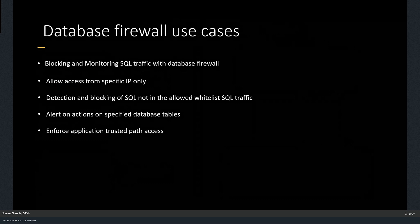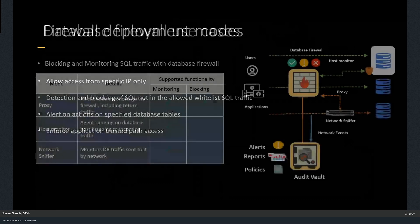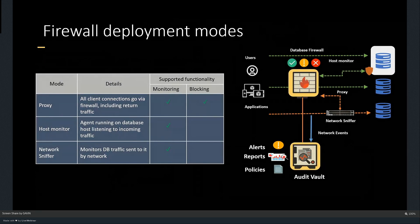There are three modes in which you can run the firewall. Host monitor just monitors the traffic coming on a particular network interface and sends that information to the audit vault server — the repository gets populated with IP addresses, usernames, client programs, etc. Once I have that data and analyze it, if I find traffic that's suspicious in nature, I can then move the firewall from monitoring mode into blocking mode.